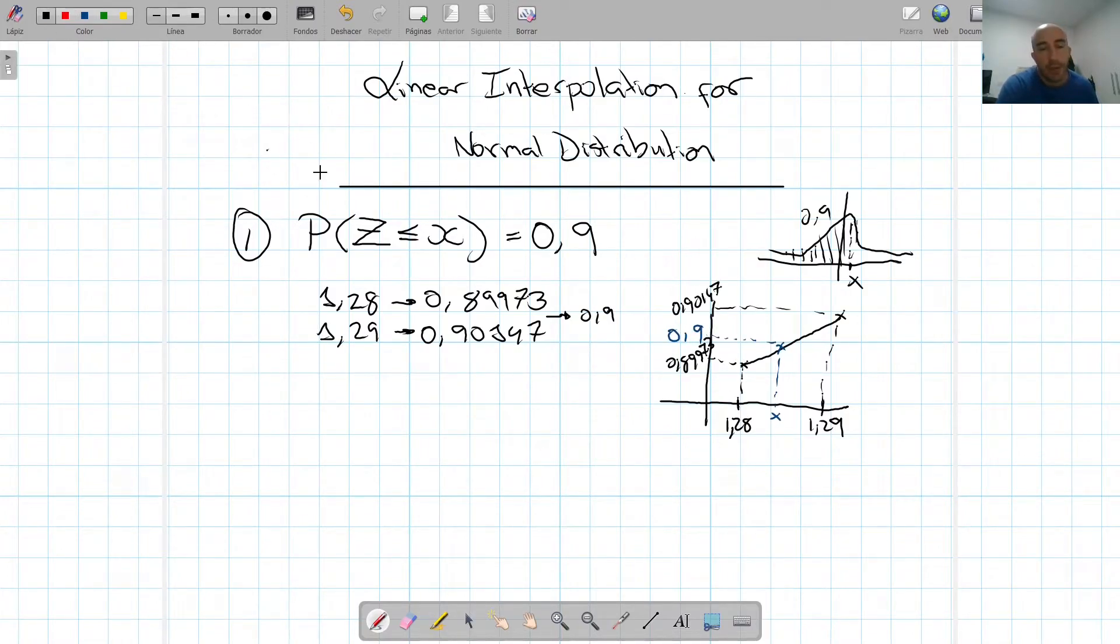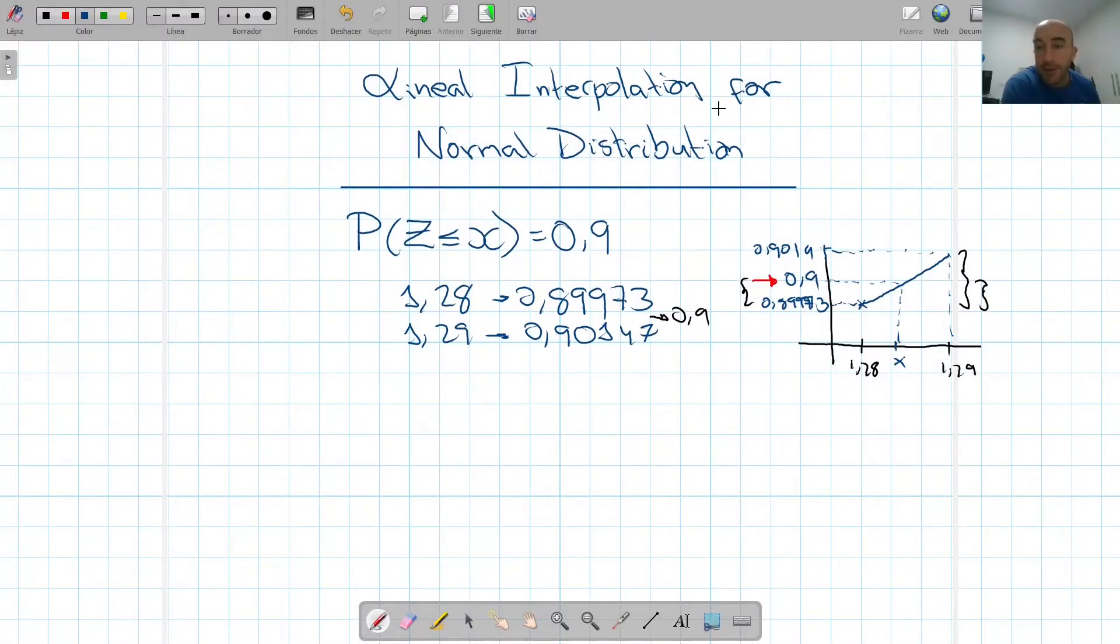So what do we do now for the interpolation? What we're going to do is we're going to find this difference and this difference and this difference. We can work with any one of them. So what we're going to do is a series of ratios of differences between these three points that we have here, supposing that it's a straight line.